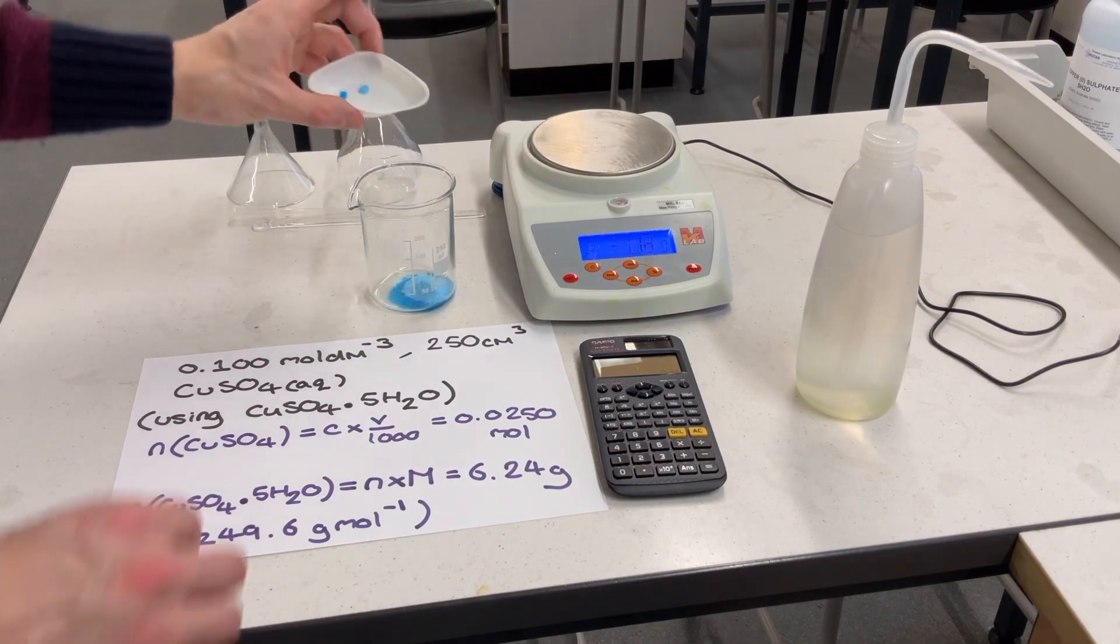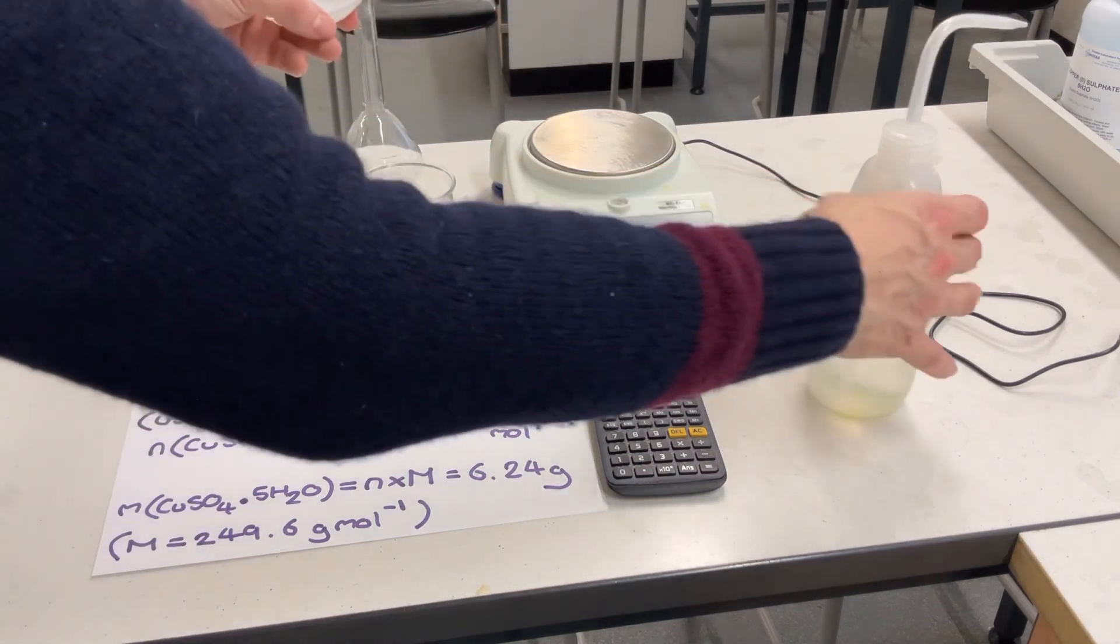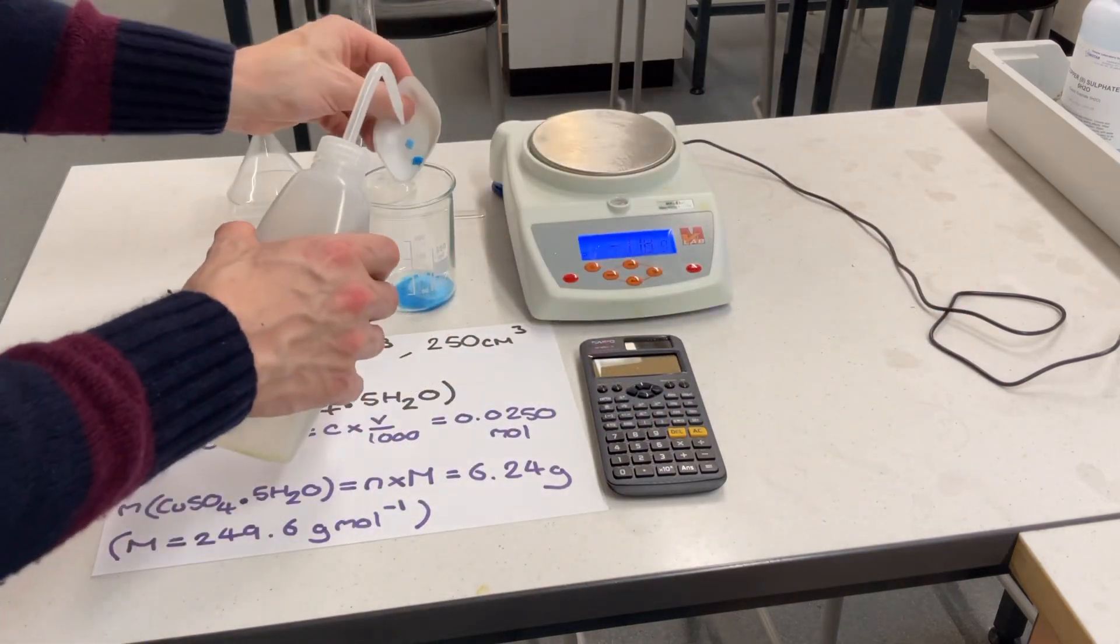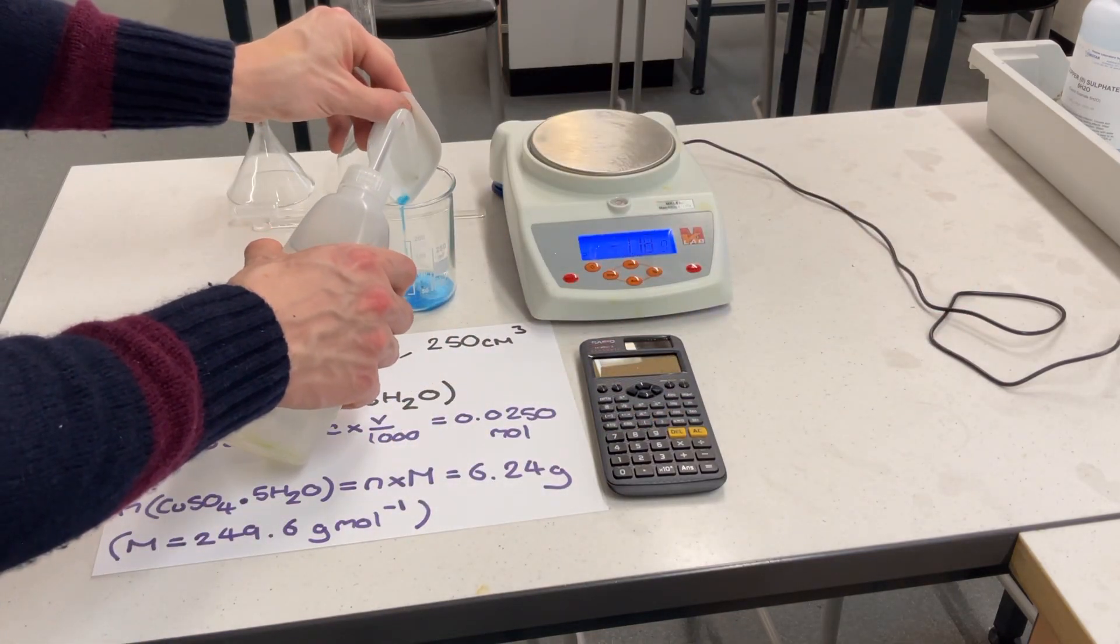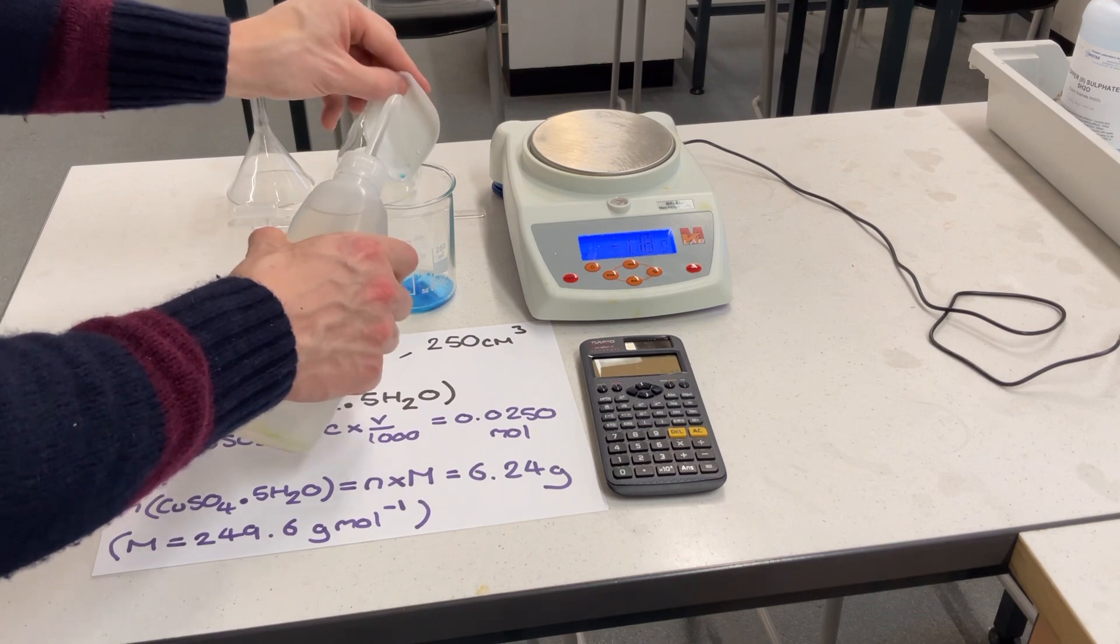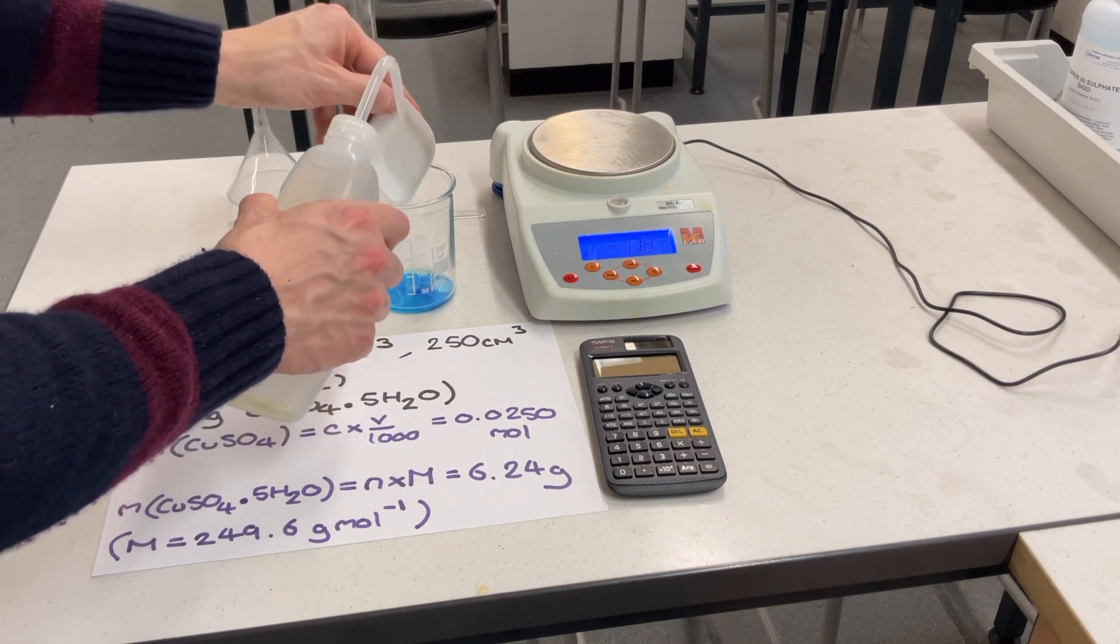Step 2: Transfer the solid to a small beaker and dissolve the solid in a small amount of deionized or distilled water. Make sure to transfer any washings from the weighing boat into the beaker at this point.